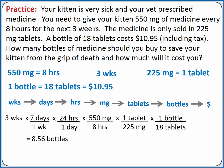Since it's not likely that we can buy 0.56 bottles, we'll round up to 9 bottles. To determine the cost of 9 bottles, we'll multiply by $10.95 per bottle, so it should cost us $98.55 to save our kitten from the grip of death.